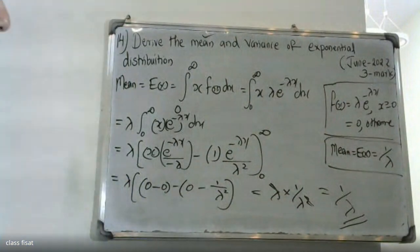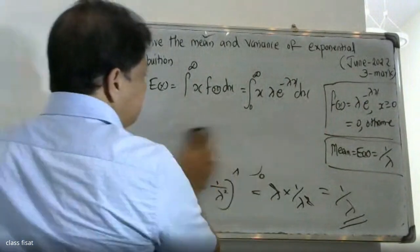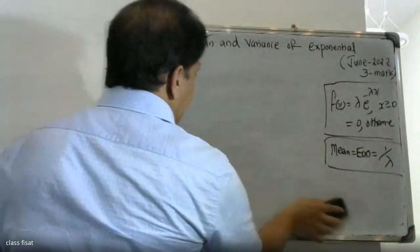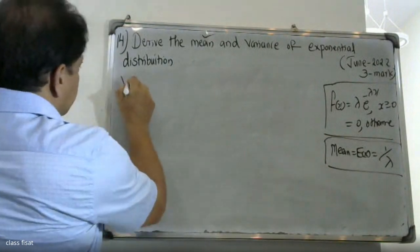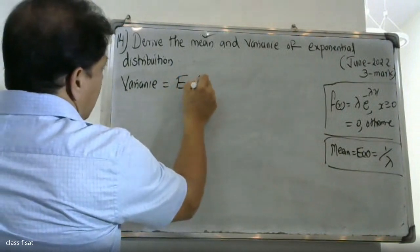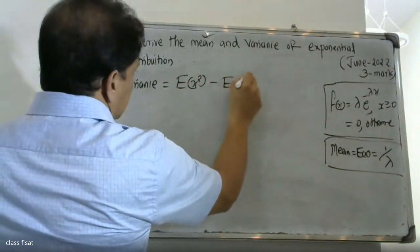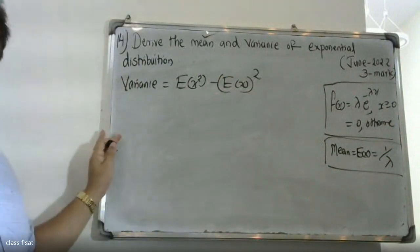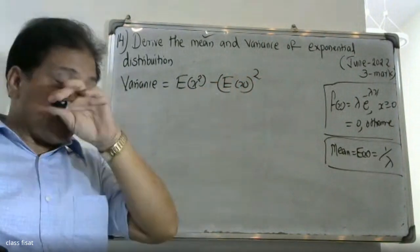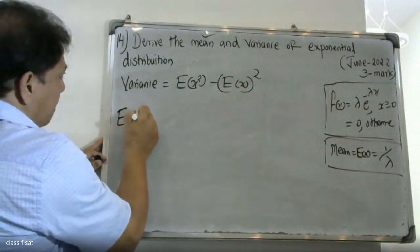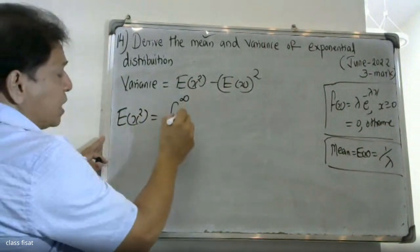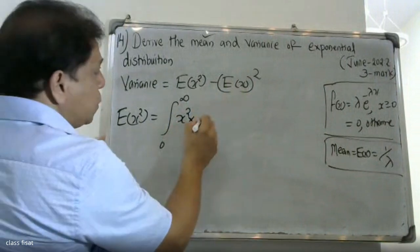Now we find the variance. Variance of x is equal to expectation of x squared minus expectation of x, the whole square. We set up the integral from 0 to infinity of x squared into lambda into e raised to minus lambda x dx.